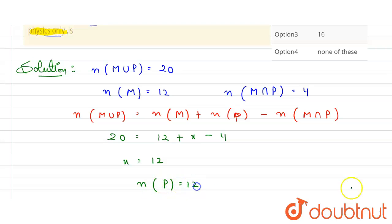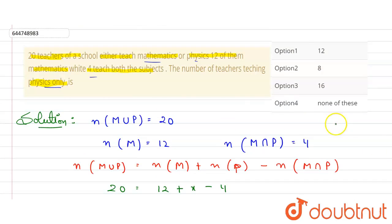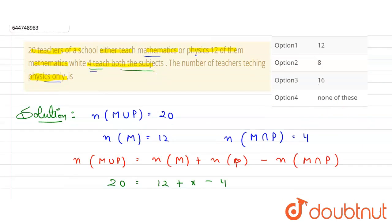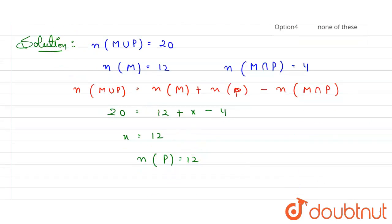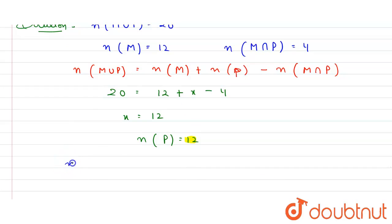Now look, in the question here it is given that 4 teachers are the teachers who teach both the subjects. So out of these 12 teachers, 4 teachers will be those teachers who teach physics and math also.